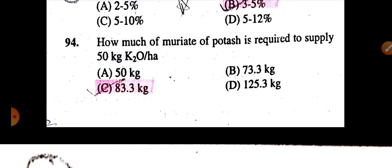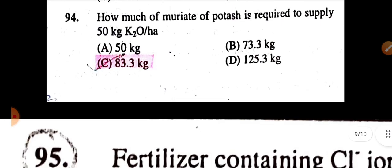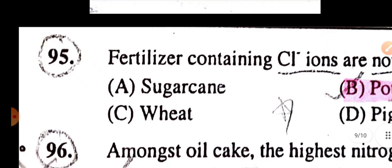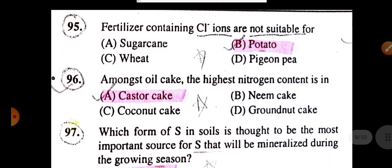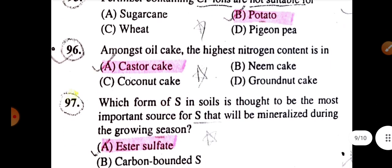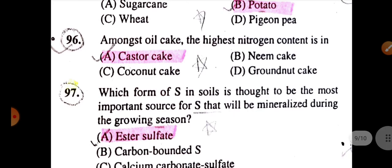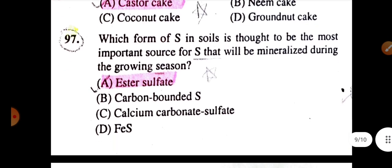What is the percentage of calcium in CaEDTA is 3 to 5%. How much muriate of potash is required to supply 50 kg K2O per hectare is 83.3 kg. Fertilizers containing chlorine are not suitable for potato. Among the oil cakes, the highest nitrogen content is in castor cake.